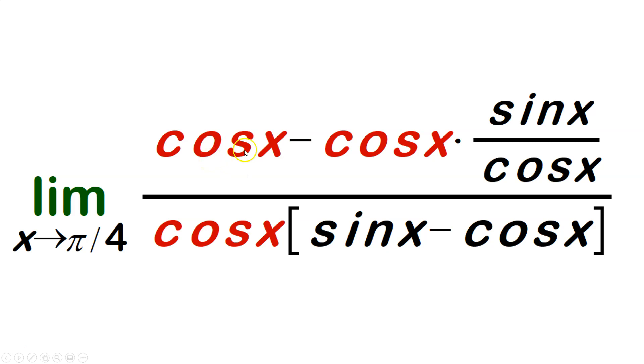Then I distribute in the numerator, so it becomes cosine x minus cosine x times sine over cosine. In the denominator, I keep the cosine and keep the sine x minus cosine x separate for now. The limit is still as x approaches π/4.